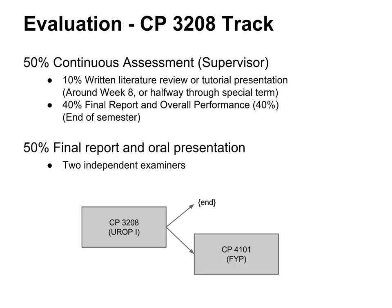In the one-semester version where you're only taking CP3208, you have the same division — 50% due to the examiners, 50% to your supervisor — but it's a bit more compressed. You have to get the entire 50% from your supervisor by the end of the course.